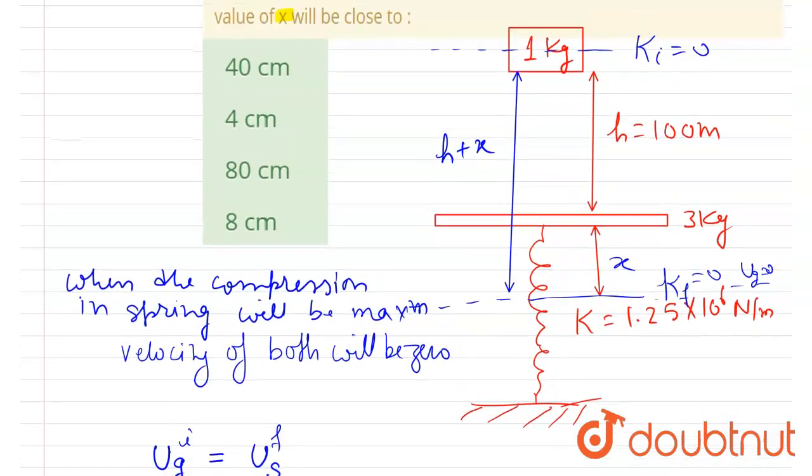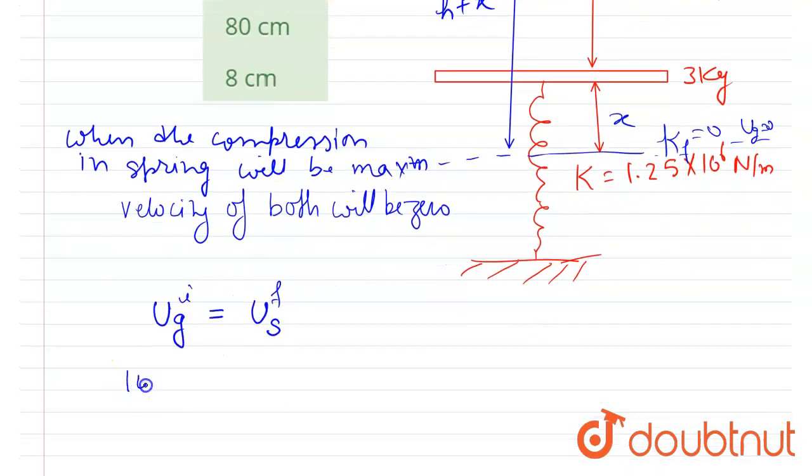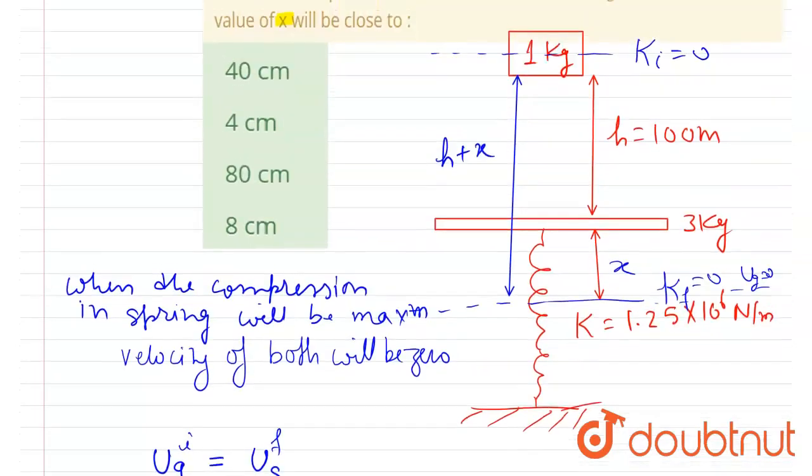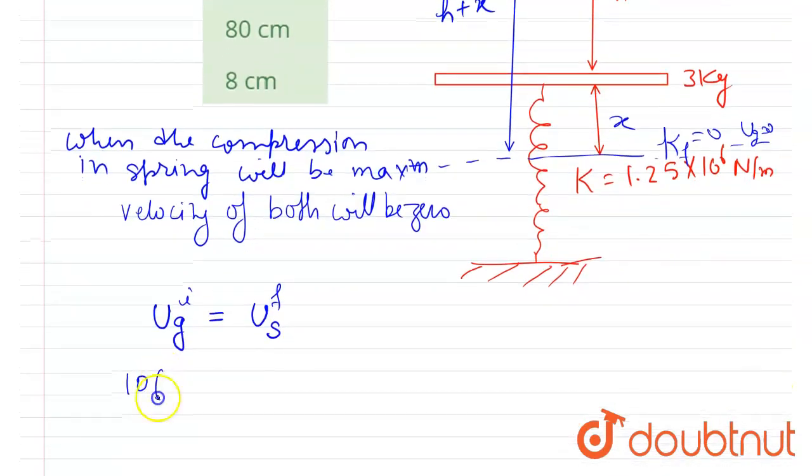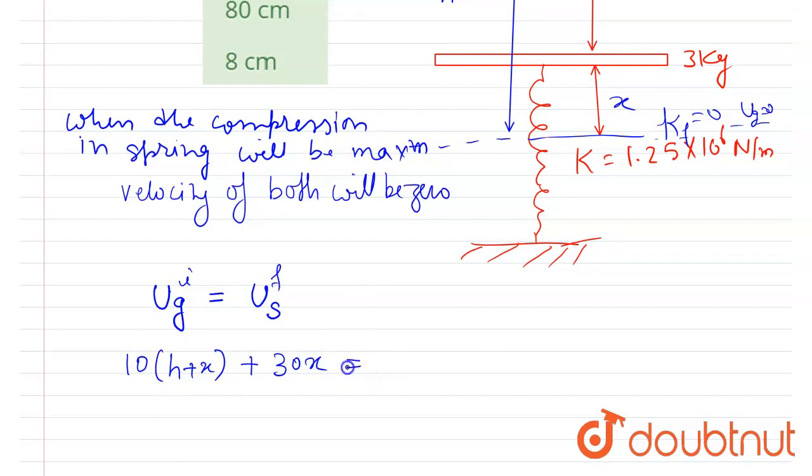So I will write initial potential energy: you could see mgh, right? So mg is 10 for this block since the block is 1 kg, and height is this. And if I talk about the platform, the platform is of mass 3 kg, so mg will be 30 into x. It will equal the spring potential energy, so I will write here (1/2)kx².